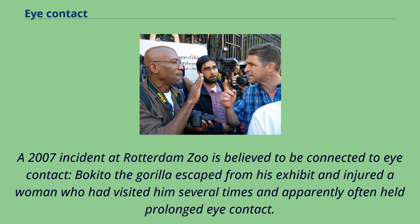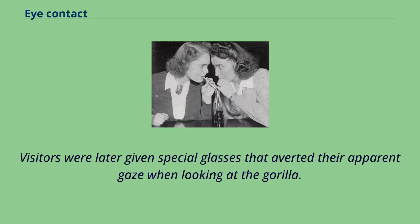A 2007 incident at Rotterdam Zoo is believed to be connected to eye contact. Bokito the gorilla escaped from his exhibit and injured a woman who had visited him several times and apparently often held prolonged eye contact. Visitors were later given special glasses that averted their apparent gaze when looking at the gorilla.